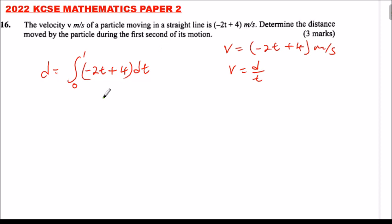When you integrate this, this equals (-2t²/2) + 4t. You add 1 to the power and divide by the new exponent. That remains like that, and we put the brackets from 0 to 1.